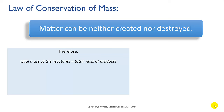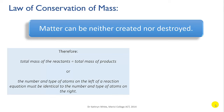So another way of looking at this — a way that helps us in balancing equations — is that the number and type of atoms in the reactants, which are written on the left of an equation, must be identical to the number and type of atoms in the products, which are written on the right. All that can happen is that the atoms are rearranged.